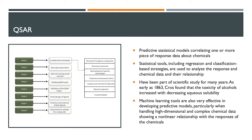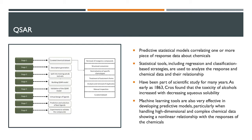There's also QSAR — quantitative structure-activity relationships — a way to predict the activity of a chemical compound based on its structure. You'd ask: if I modify the structure this way, what happens to the activity? Machine learning regression models can be trained to predict what that activity could be. It's been around for many years and is still heavily used.